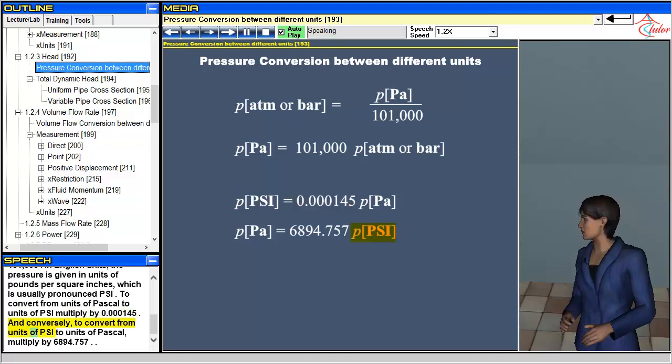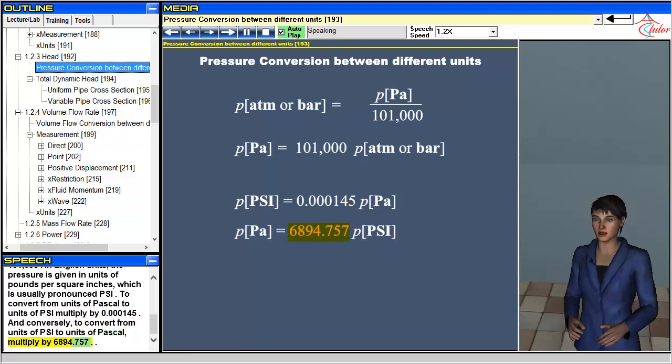Conversely, to convert from units of PSI to units of pascal, multiply by 6,894.757.